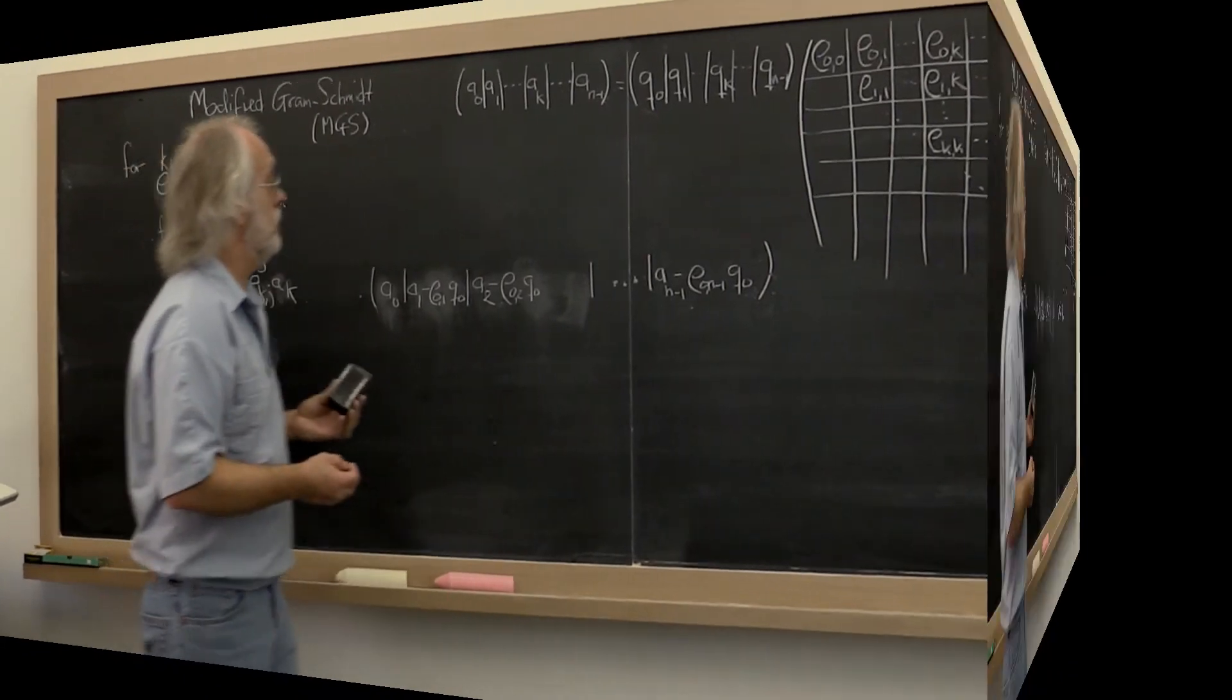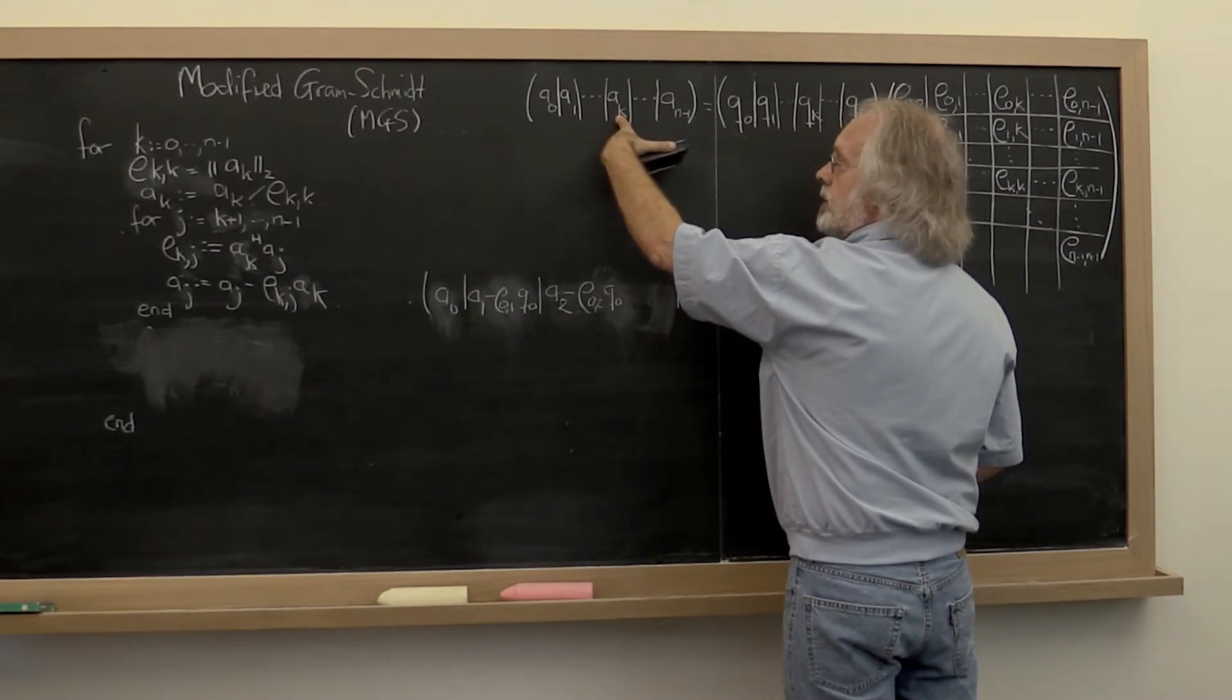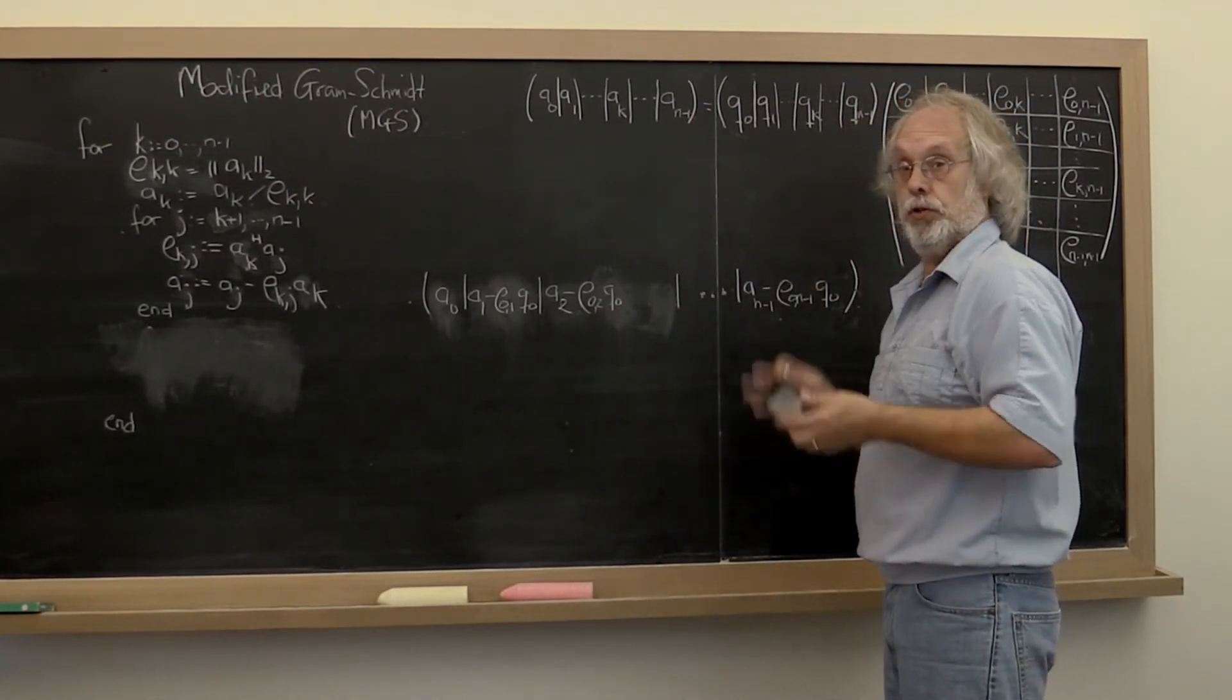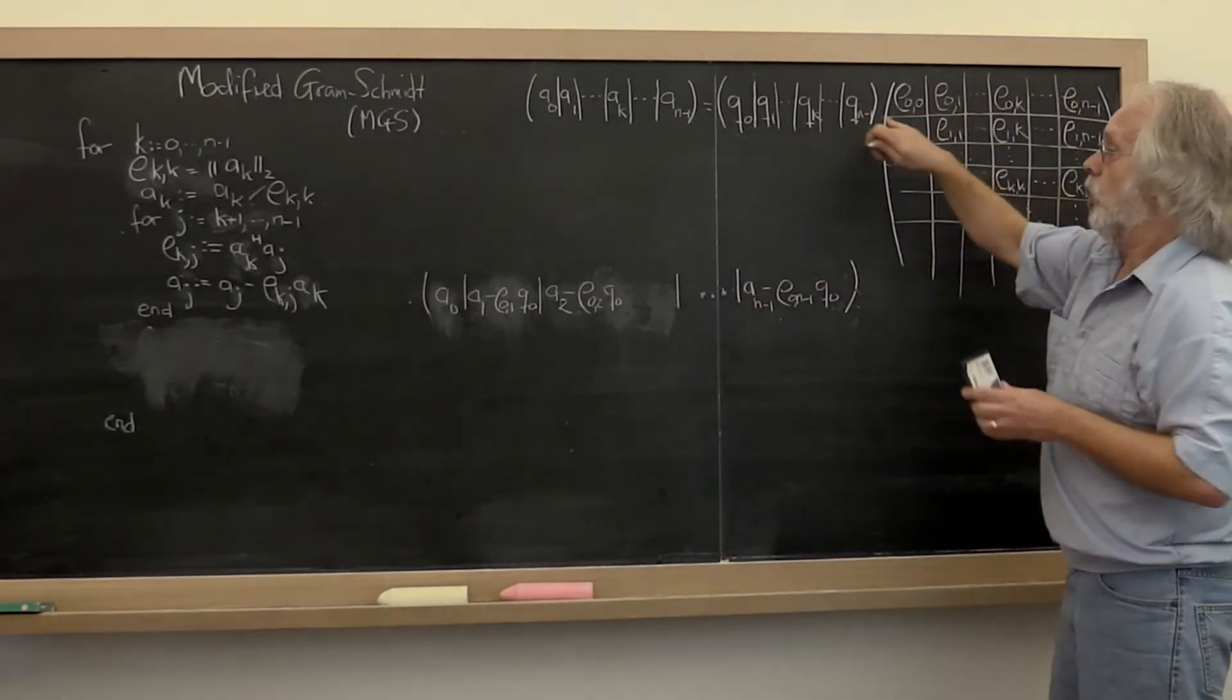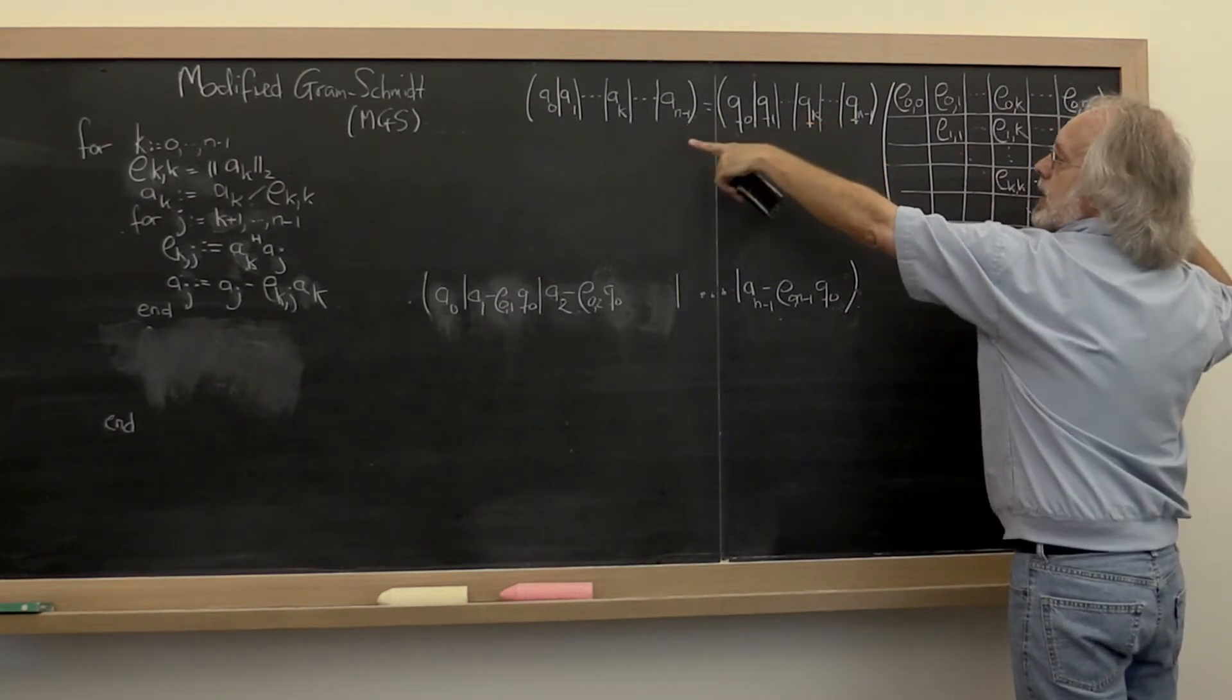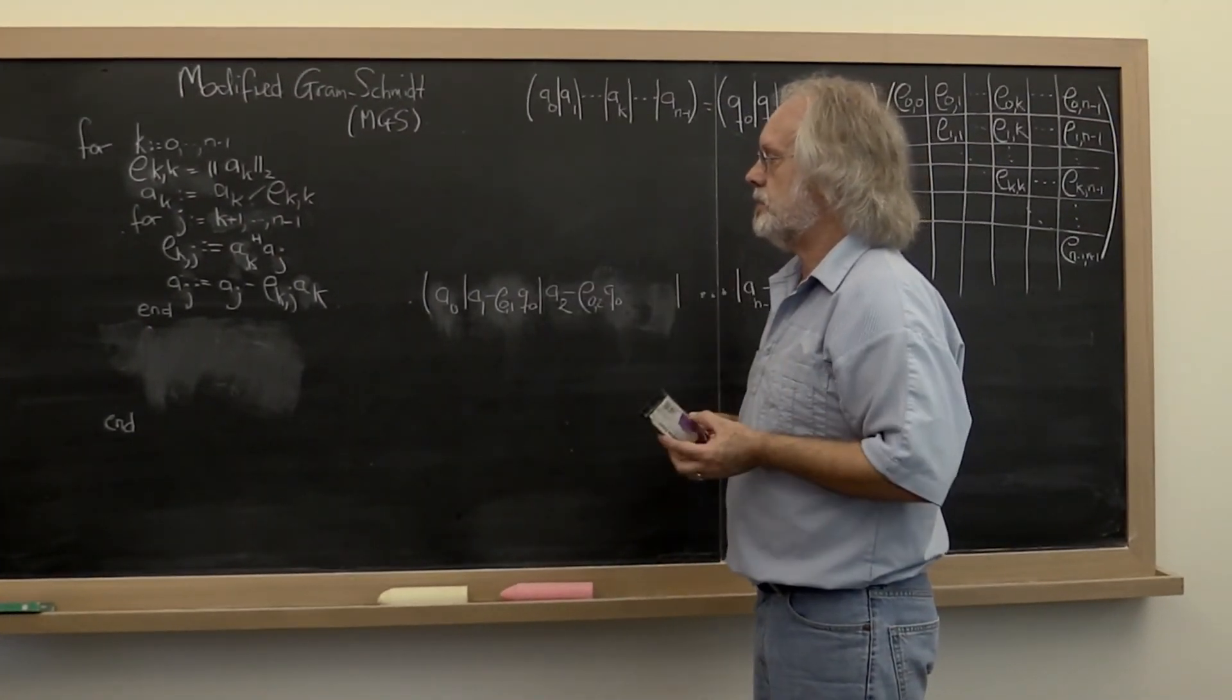And what does it do? Every time it hits a new column, it already has been updated with the component orthogonal to the previous Qs. It then goes and one at a time computes a new coefficient in the appropriate row and subtracts out the component corresponding to that coefficient. So let's play with this just a little bit more.